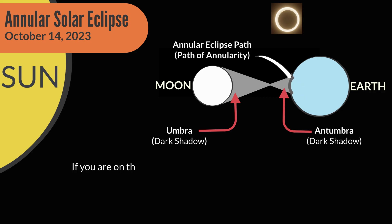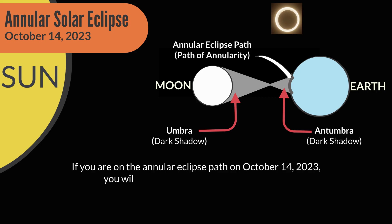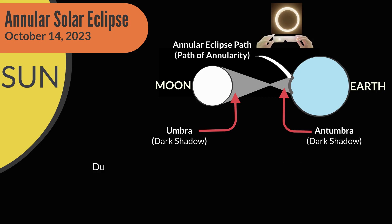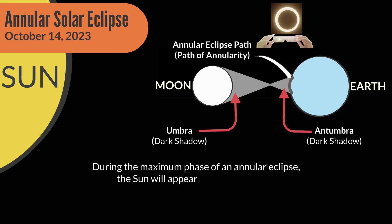If you are on the Annular Eclipse path on October 14, 2023, you will experience an Annular Solar Eclipse. During the maximum phase of an Annular Eclipse, the Sun will appear like a ring of fire.